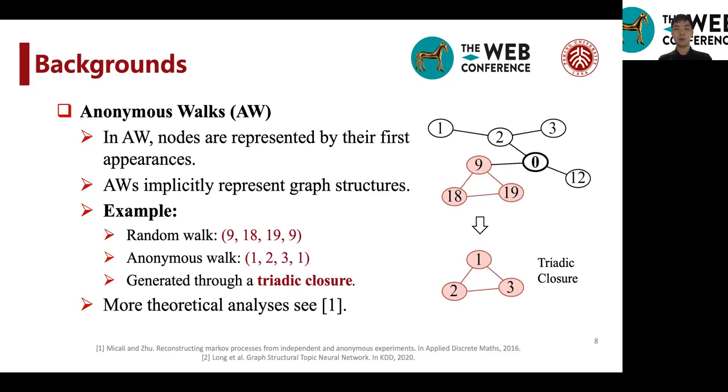In an anonymous walk, nodes are represented by the first appearances instead of their exact identities. And a good property about anonymous walks is that they implicitly represent graph structures. Let me show you an example. For a random walk in the right graph, such as 9, 18, 19, and 9,